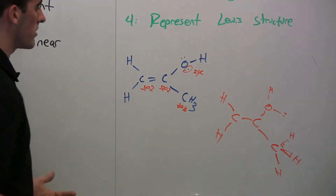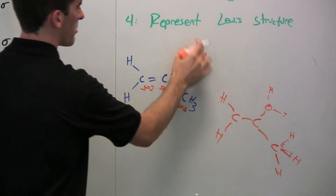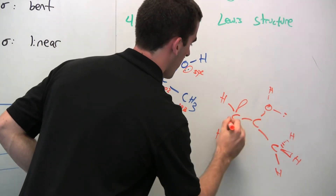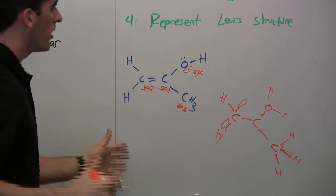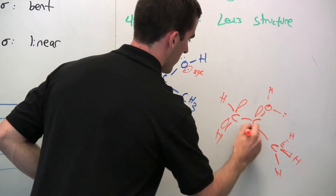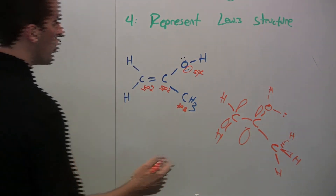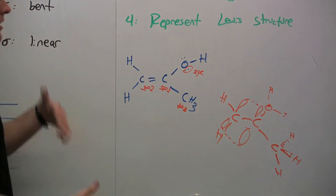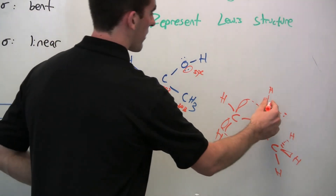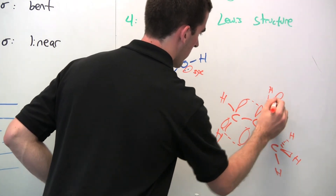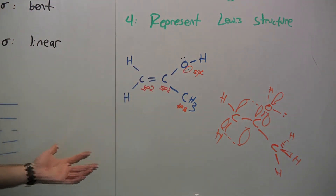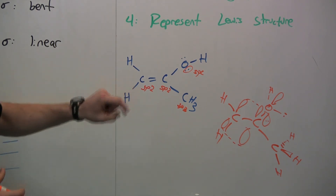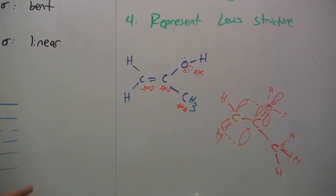Now we need to put in our p orbitals. We have a double bond here, and we also need to draw p orbitals on the oxygen to account for that delocalized pair of electrons. The p orbitals come in and out of the board. We draw them for the second carbon as well, then link them together to form the double bond — this indicates the pi electrons forming the double bond. For the oxygen, we draw the p orbitals depth-wise and place the localized pair into one orbital — both electrons go in the same orbital, not split between the two lobes.